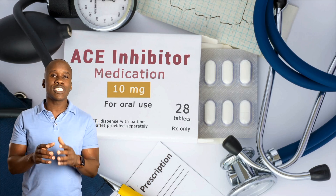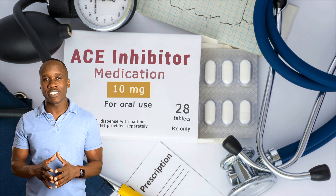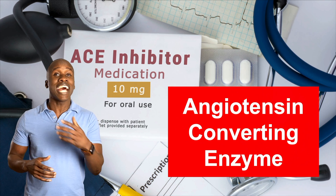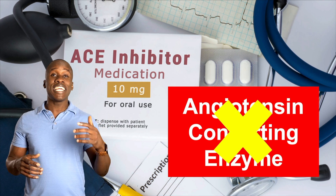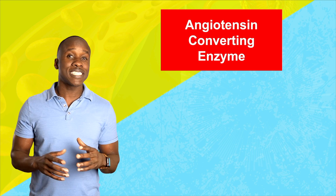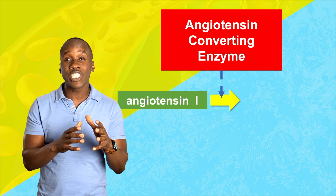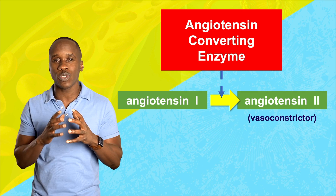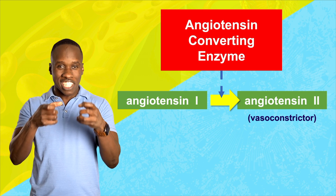Let's look now at the next category: ACE inhibitors. ACE inhibitors are a class of drugs that block the angiotensin-converting enzyme. This enzyme is very important — it converts angiotensin-1 to angiotensin-2. And angiotensin-2 is a very potent vasoconstrictor — it causes your blood vessels to constrict.